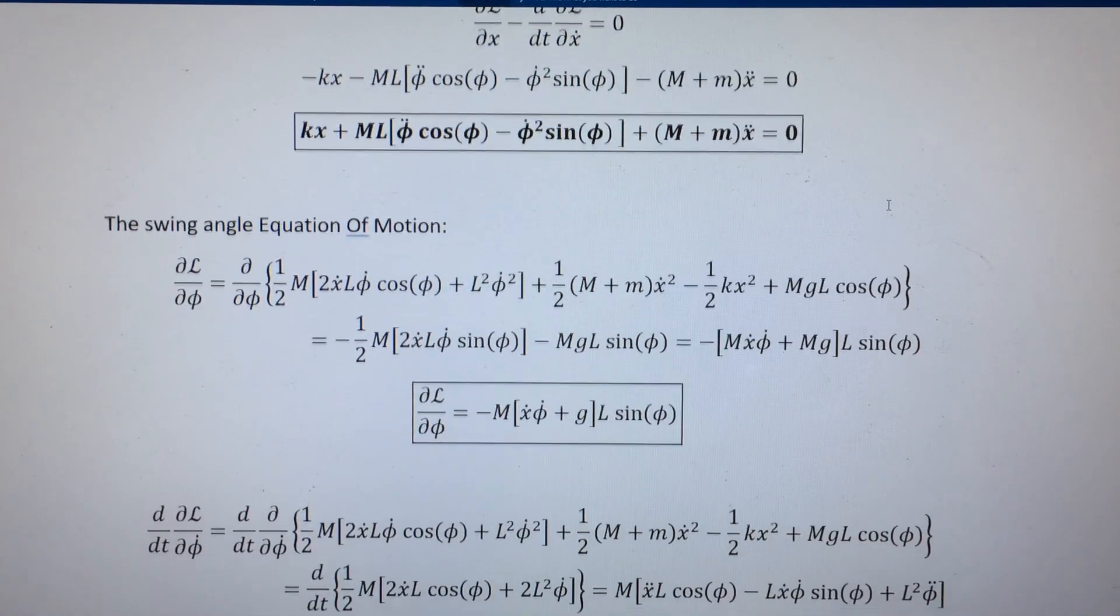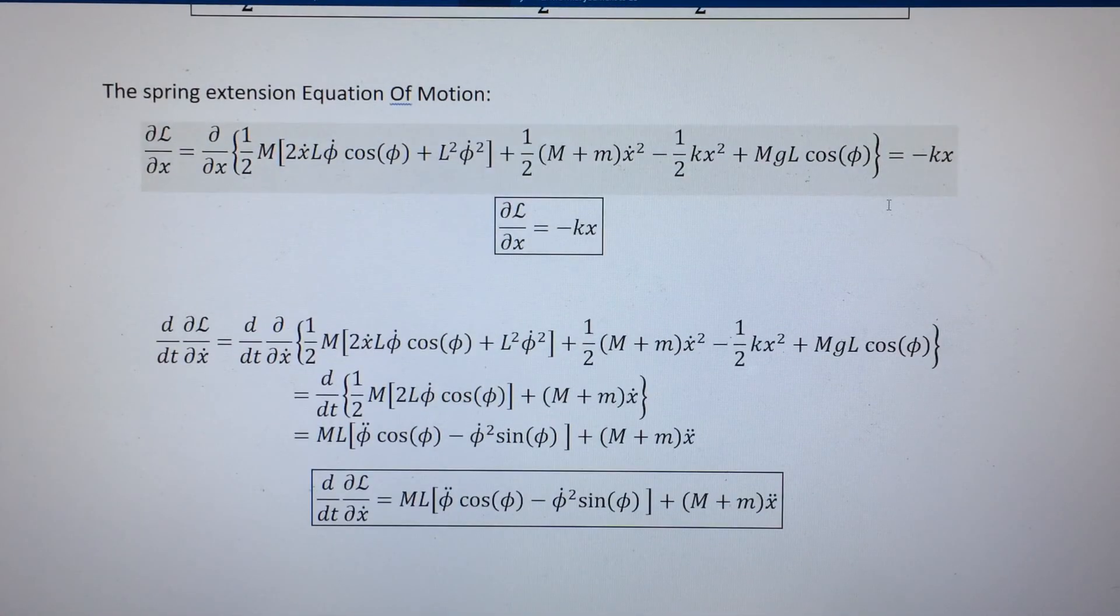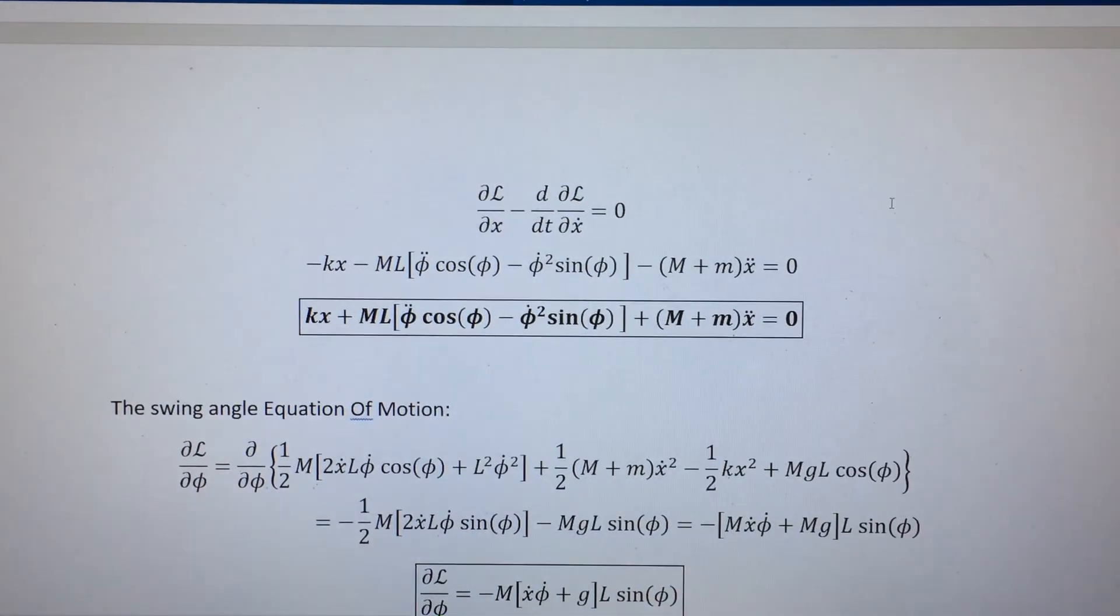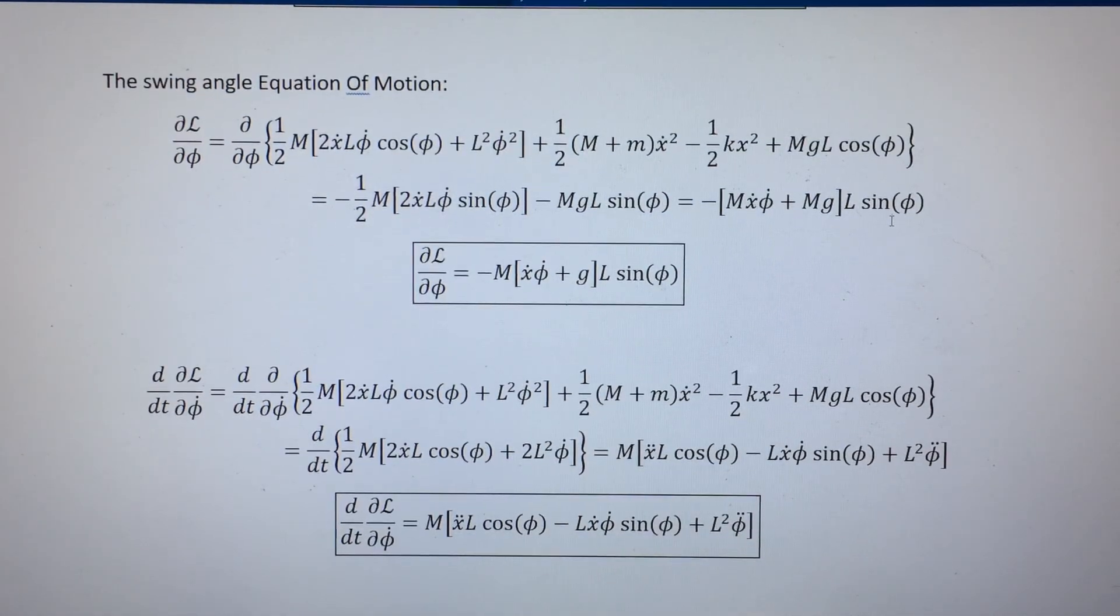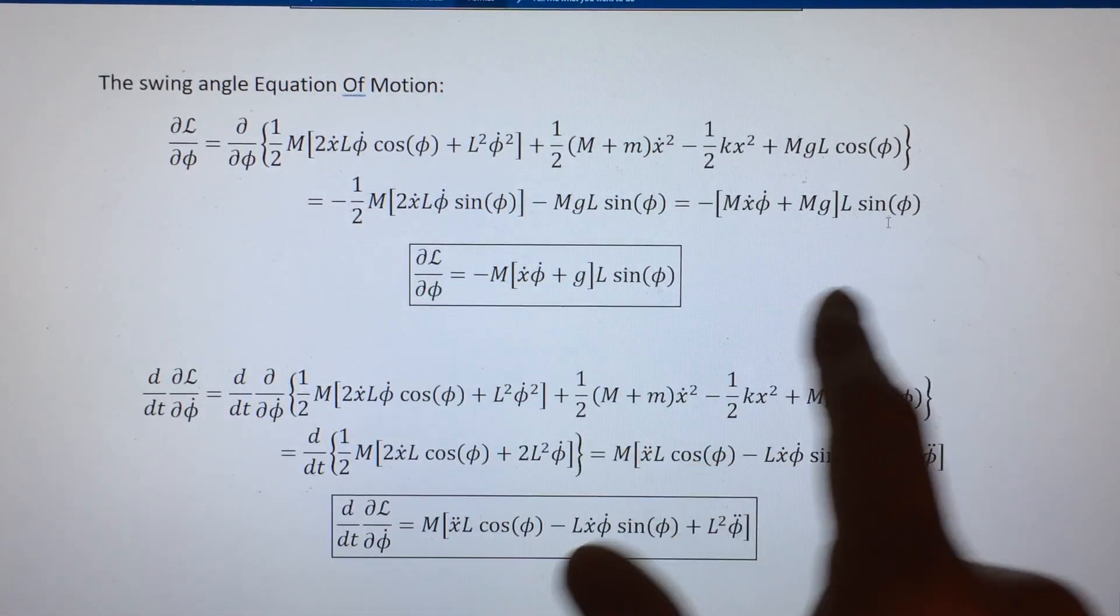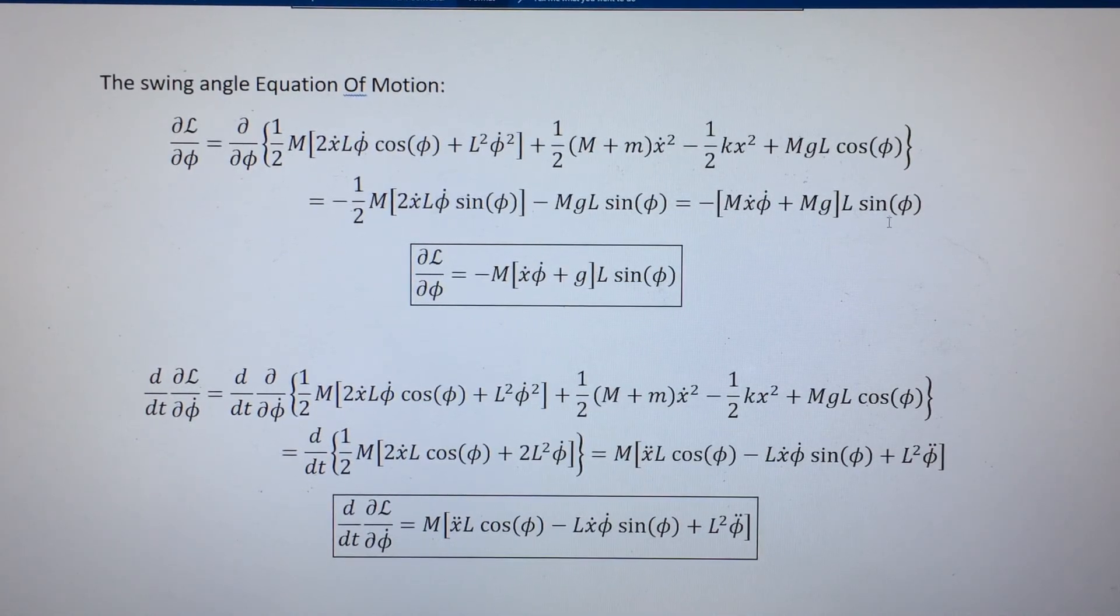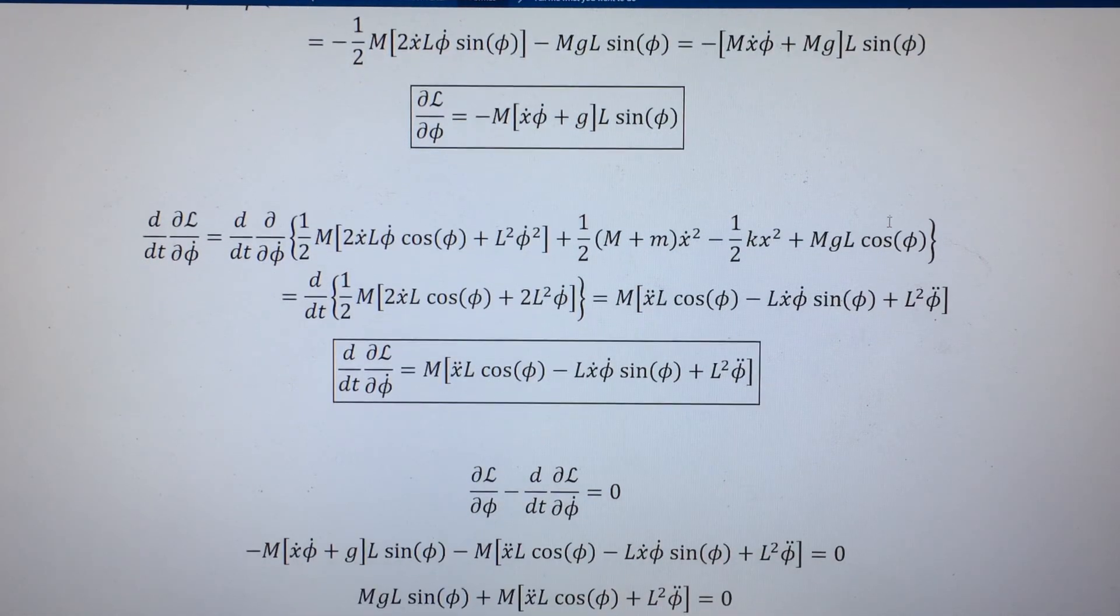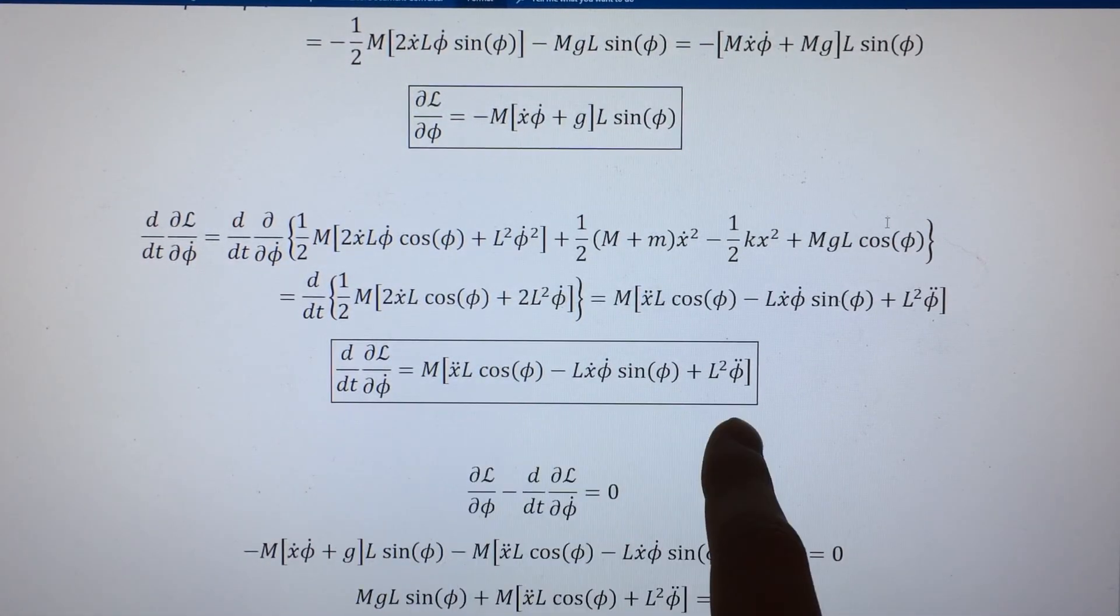Continuing on, now we need the swing angle equation of motion. We've got the spring extension equation of motion finished. Now we need the swing angle equation of motion, and the process is the same. We differentiate the Lagrangian with respect to that generalized coordinate and get a nice, not-too-complicated result. Then we differentiate the Lagrangian with respect to the time variation of the generalized coordinate, this oscillation angle, and then apply a time derivative to that and get this result.